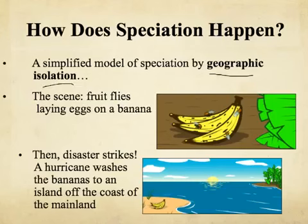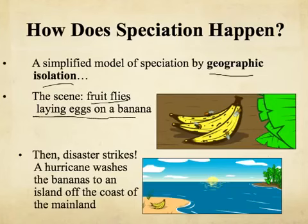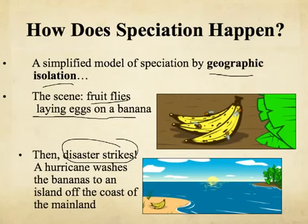Let's set the scene. I have some fruit flies doing their fruit fly thing and laying eggs on a banana. And then BAM — disaster strikes! A hurricane washes the banana to an island off the coast of the mainland. In other words, the banana with the fruit flies is removed to a distant location.